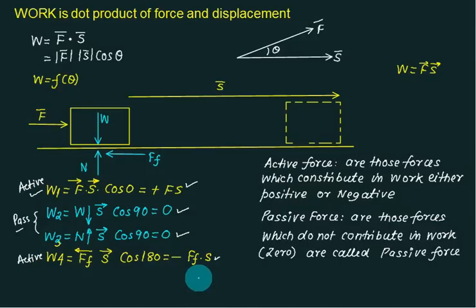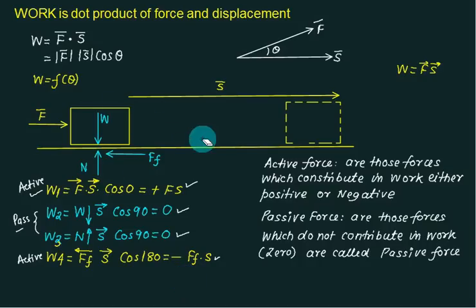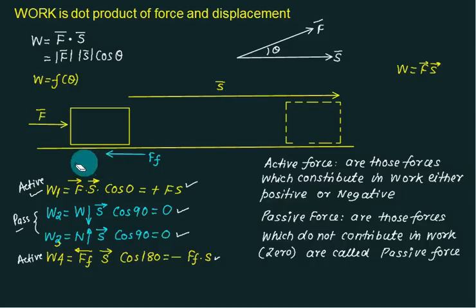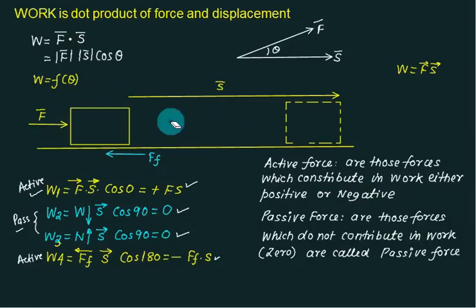In the virtual work method, only active forces are shown. If you are using a figure for a free body diagram (FBD), that is fine as-is. But if you are using it for virtual work, the forces perpendicular to displacement — the 90° combinations — are not shown. Only forces that are either parallel or opposite to displacement (active forces) are included in the virtual work diagram.